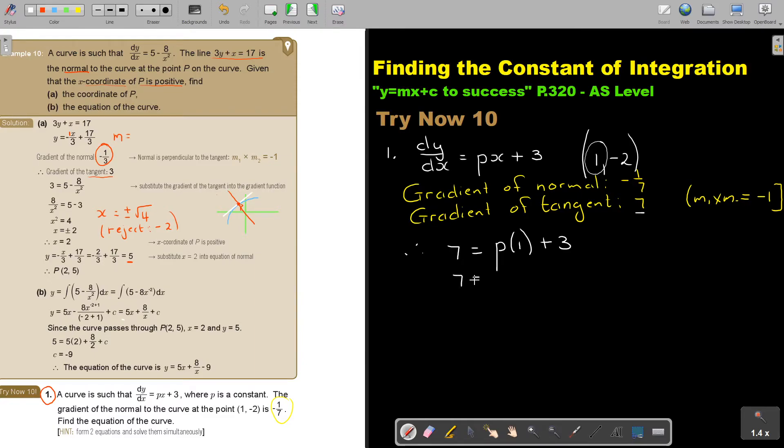So this will give me 7 equals P times 1 plus 3. So 7 minus 3 is equal to P. Therefore, P will just be 4.